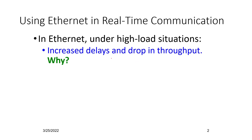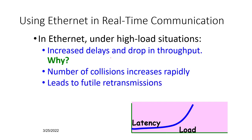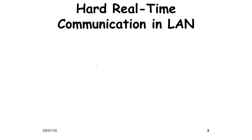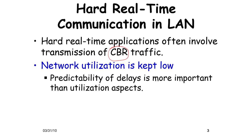In a high-load situation there are increased delays and drop in throughput. The reason is contention — the number of collisions between multiple stations connected to a bus. Multiple nodes connected would try to transmit at the same time, leading to a high rate of collisions. A collision leads to retransmission, which is why Ethernet networks are not preferable and often contraindicated in real-time applications.